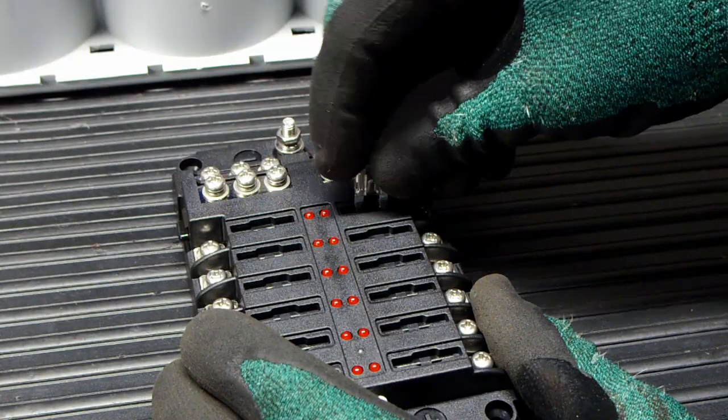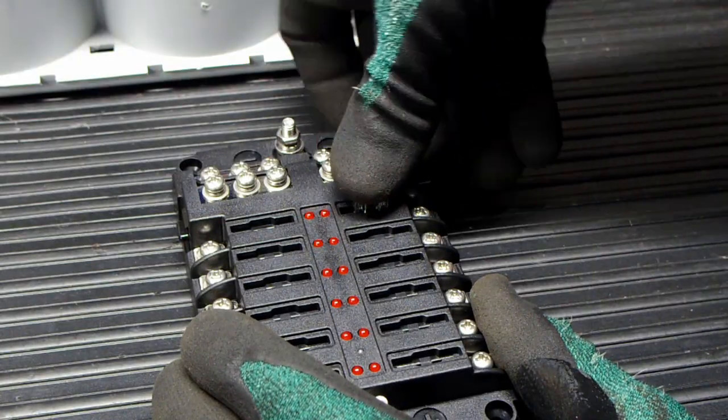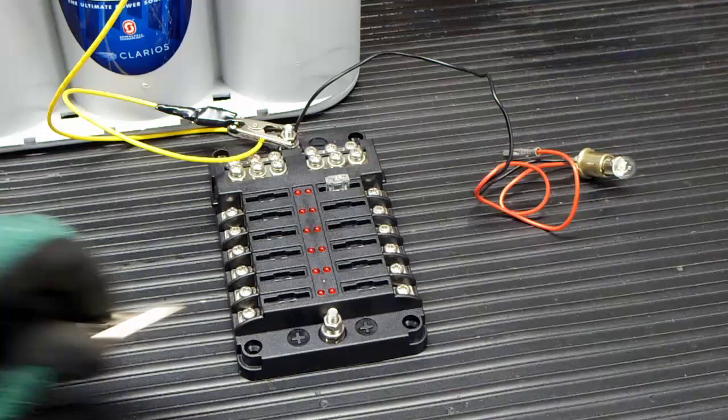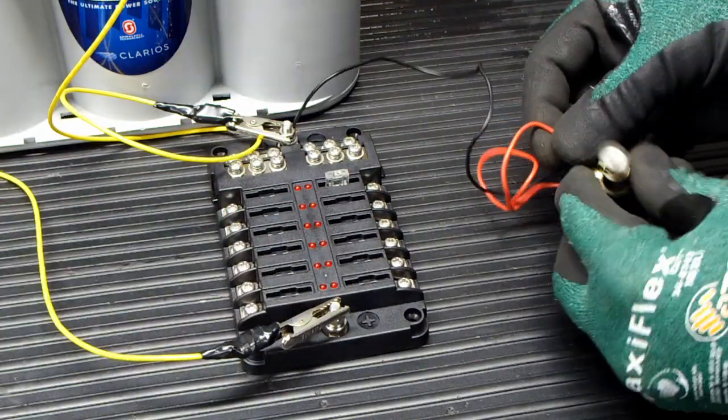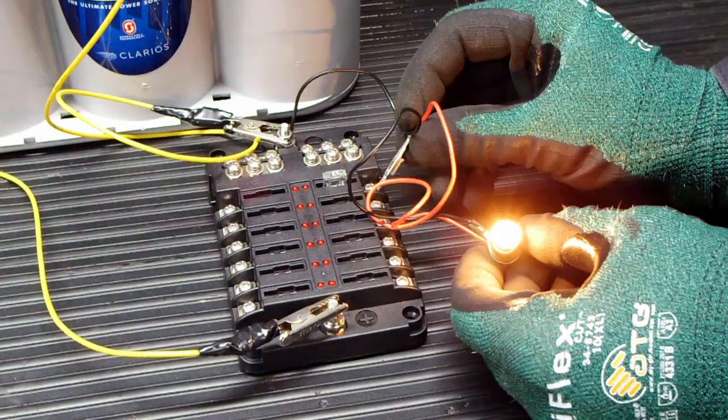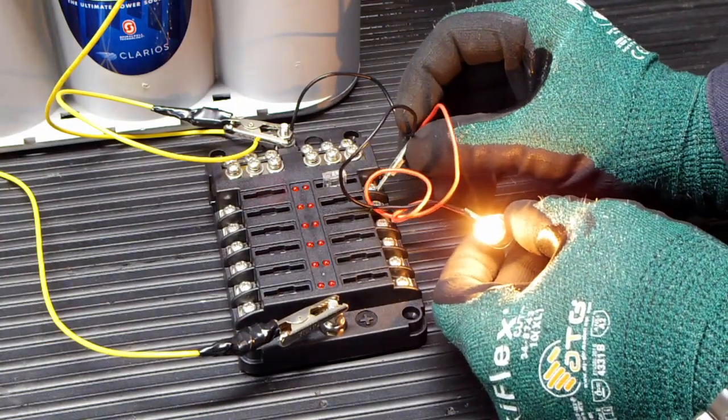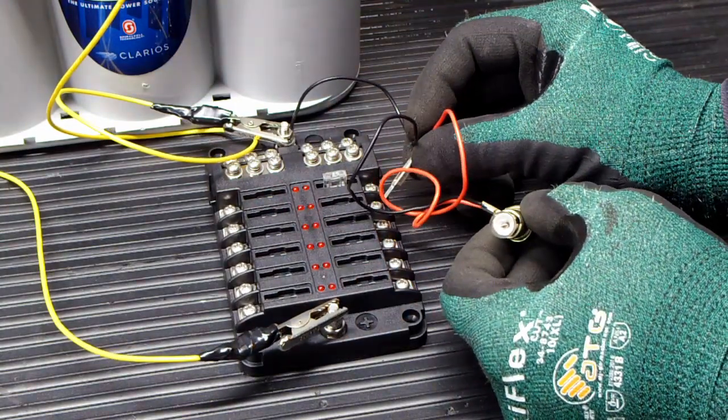Our fuse block will take ATO, ATC, or ATM fuses. If you're not sure which one you need, just take the fuse block to any auto parts store. This fuse block has a nice fault indicator light. The light will come on if a fuse is blown.